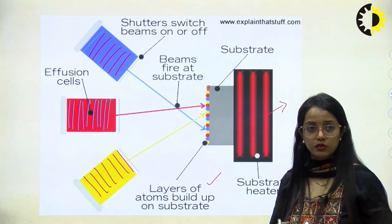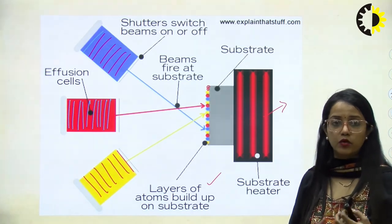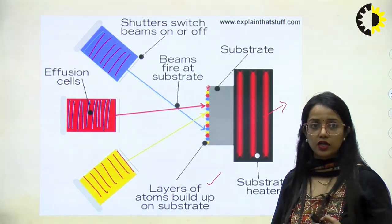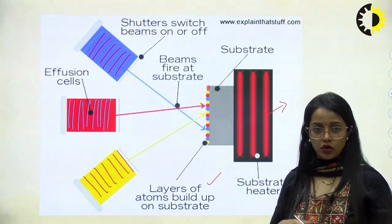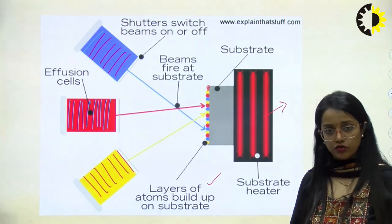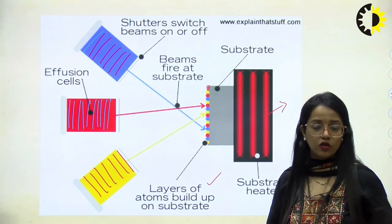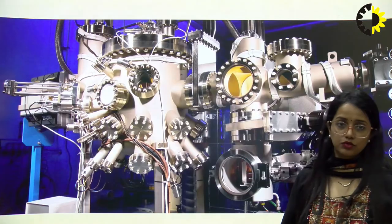Depending upon the shutter speed — by monitoring the shutter speed — we can switch on and switch off the layering or the epitaxial growth.